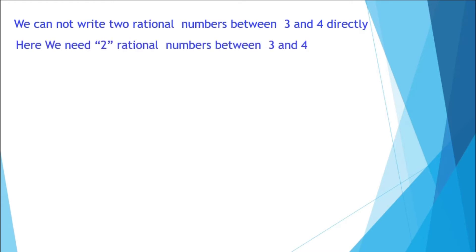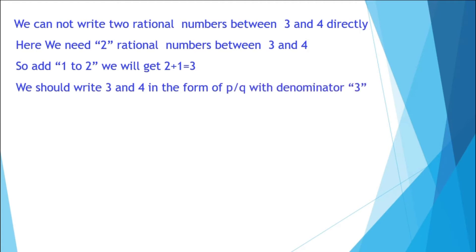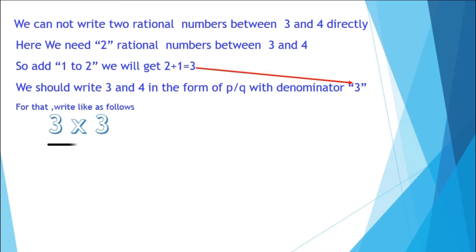Here we need two rational numbers between three and four, so we add one to two to get three. Now we have to write three and four in the form of P by Q with denominator three. We need two rational numbers between three and four, so we use denominator three. If we need three rational numbers, we write the denominator as three plus one, that is four. Here we need only two, so we write three into three by three and four into three by three.